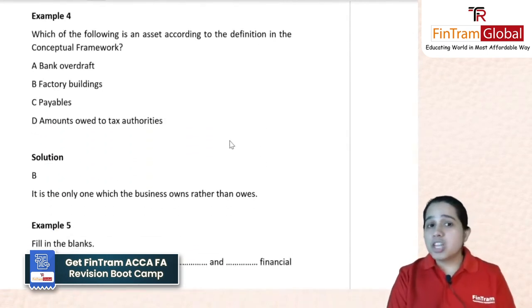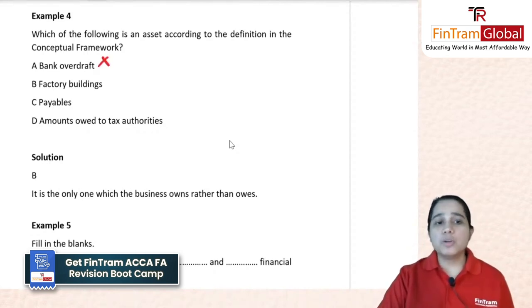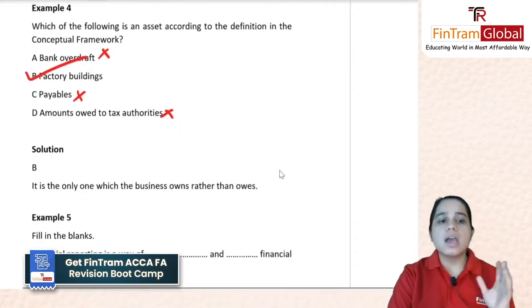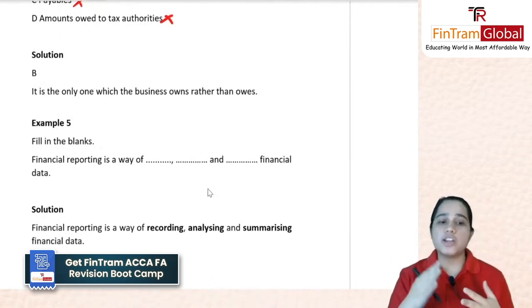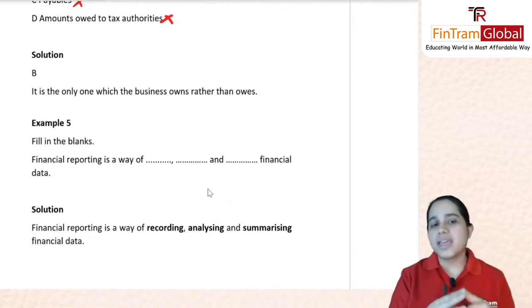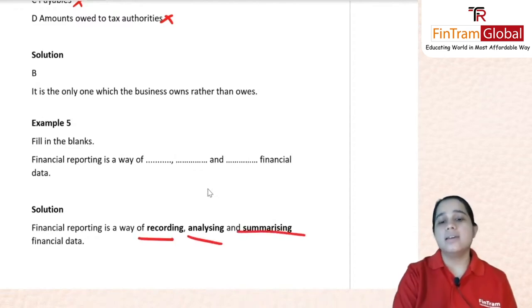Example 4: which of the following is an asset according to the definition by the conceptual framework? Bank overdraft — definitely a liability. Factory buildings — yes. Payables — liability. Amount owed to tax — also a liability. The only asset here is factory buildings, so the answer is B. Example 5: fill in the blanks — financial reporting is a way of [blank], [blank], and [blank] financial data. From the beginning of the session: financial reporting is a way of recording, analyzing, and summarizing financial data. The correct answer is: recording, analyzing, and summarizing.